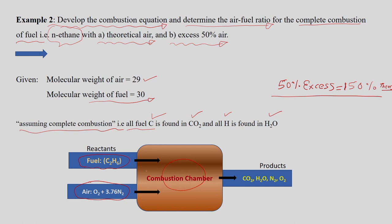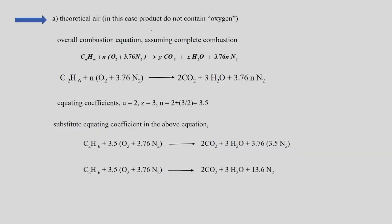The complete combustion process produces CO2, H2O, N2, and O2. For the theoretical air case, the product does not contain oxygen — that is the meaning of theoretical air for combustion. Based on the overall combustion equation assuming complete combustion, it is in the form already written.